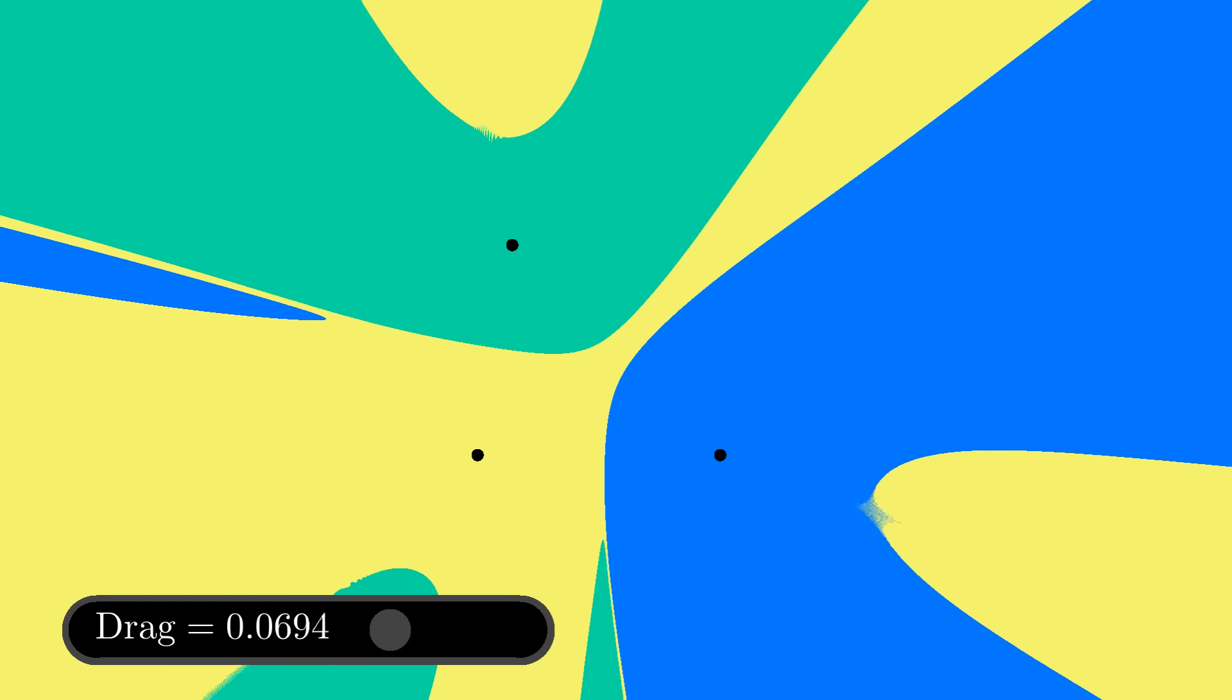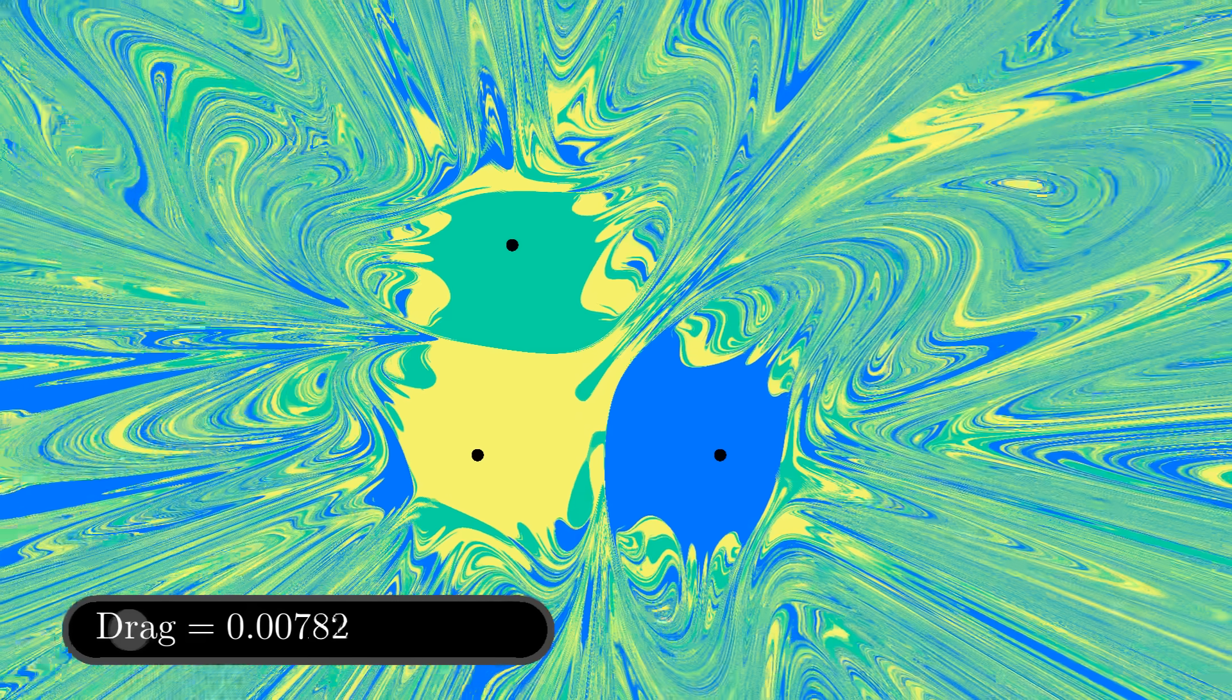As drag decreases, the more time the object spends winding in complicated orbits before its fate is decided, and thus the more scrambled the colors get.